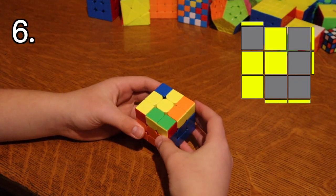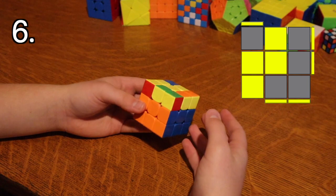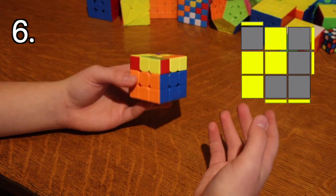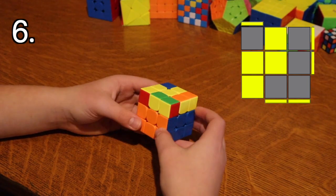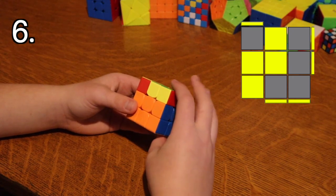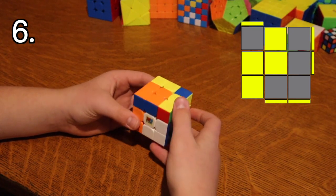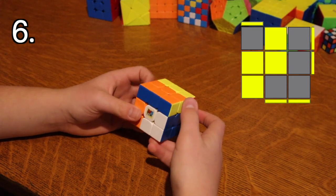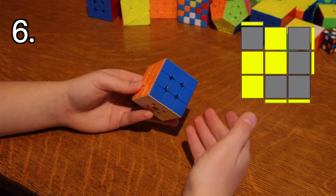And that leads us to this case right here. It's the same thing as the last one, but instead of an anti-sune, it's a regular sune. So it's one of the lightning bolt cases. And if you hold it like this and do a sune, but with wide moves at the front and back, like that, and it solves it.